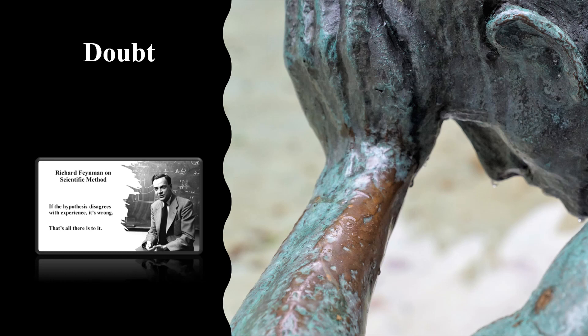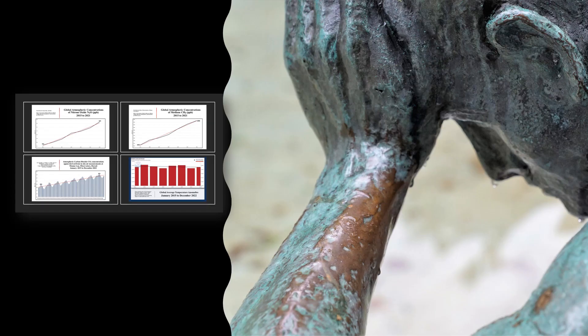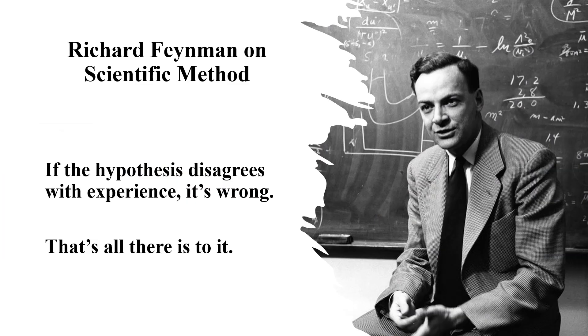The United Nations, the World Economic Forum, and the IPCC must modify their approach and be more critical of the greenhouse gas hypothesis. It has a failure rate of 83.24%. And one more fact needs to be faced: this is happening right now. Global average temperature has been on a downward cooling trend since 2015, while greenhouse gas concentrations have increased. These organisations must face the fact that the greenhouse gas hypothesis could well be wrong — perhaps moderately wrong, perhaps completely wrong.